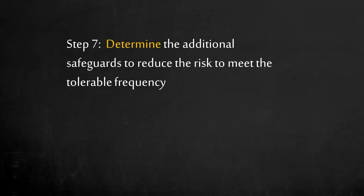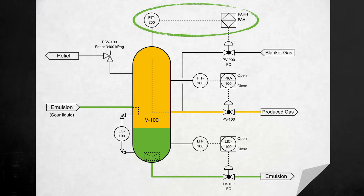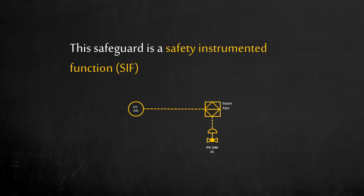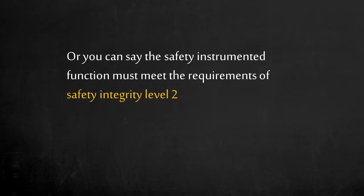Step 7: determine the additional safeguards to reduce the risk to meet the tolerable frequency. We can add an independent high pressure shutdown on the blanket gas as a safeguard to eliminate the high pressure source. We added a safeguard consisting of a sensor, logic solver, and valve — the final element. We call this a safety instrumented function: an automated safety action to bring the process to a safe state. The current system is 100 times more likely than acceptable, so the safety instrumented function needs to reduce the likelihood by a factor of 100, with a probability of failure on demand less than 1%. Since this safety function must reduce the consequence likelihood by 100 times, it must meet the requirements of Safety Integrity Level 2.